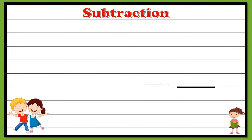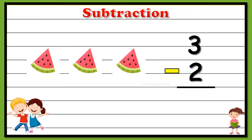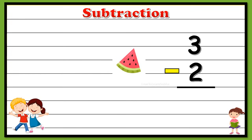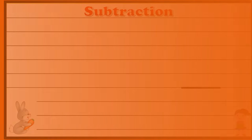Now let's understand the process of subtraction with this example. Here we have one, two, three — so totally we have three pieces of watermelon. Since we have two kids, each one would have taken one piece each, so we have three minus two. Now let's check out the remaining balance. When we subtract, the remaining piece of watermelon is one.